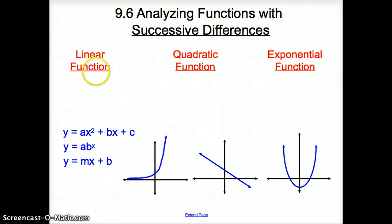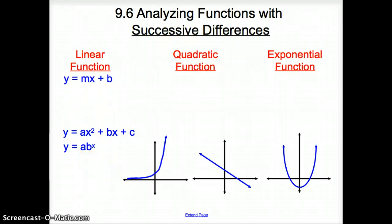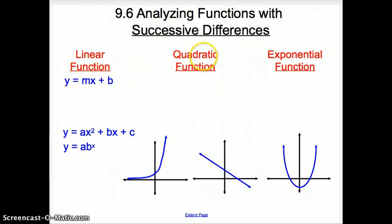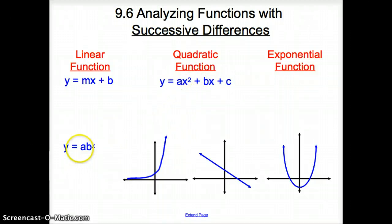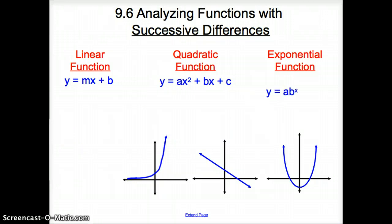Starting with the linear function, remembering back to last year where we had y equals mx plus b, where m was your slope and b was your y-intercept. The quadratic function is what we've been working with throughout all of chapter 9 — it always had a square in it. And then the exponential function, which we haven't touched on too much this year, but you did have it last year, where it was y equals a times b to the x.